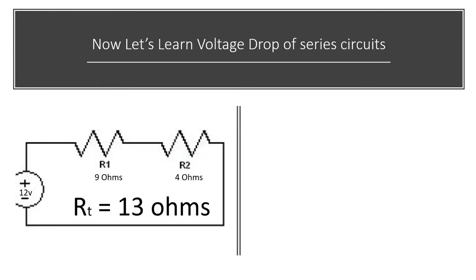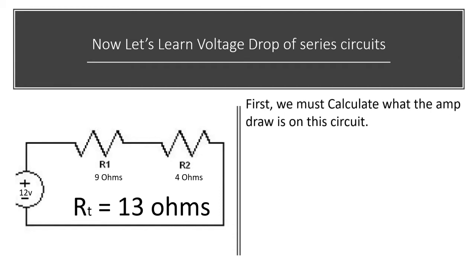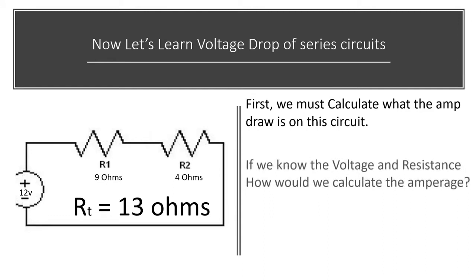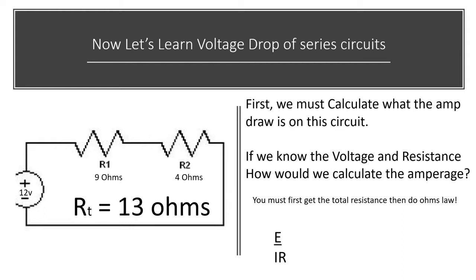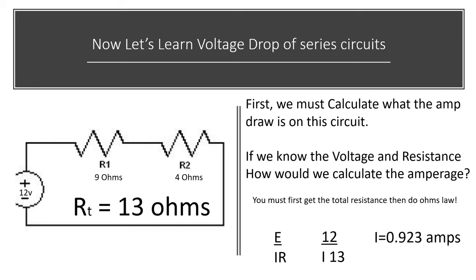Now let's learn about voltage drop of series circuits. First, we must calculate what the amp draw is on the circuit. If we know the voltage and the resistance, we can calculate the amperage — we learned about Ohm's law in week two, part one. We must get the total resistance and then apply Ohm's law. In this case it is nine plus four, which is 13 ohms. We plug in the knowns: it's a 12-volt circuit with 13 ohms of resistance. We divide 13 into 12, and that gives us our amperage — 0.923 amps.